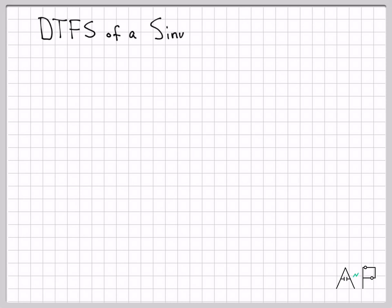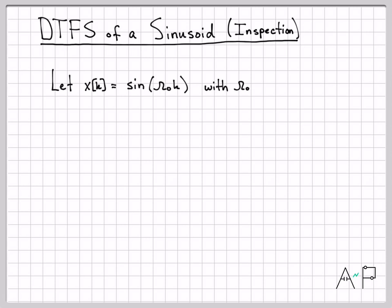All right, so let's go ahead and do it by inspection though to start with. We're going to find the DTFS of a sinusoid using the inspection technique. And in this particular example, we're going to work with x of k equals sine of omega naught k.